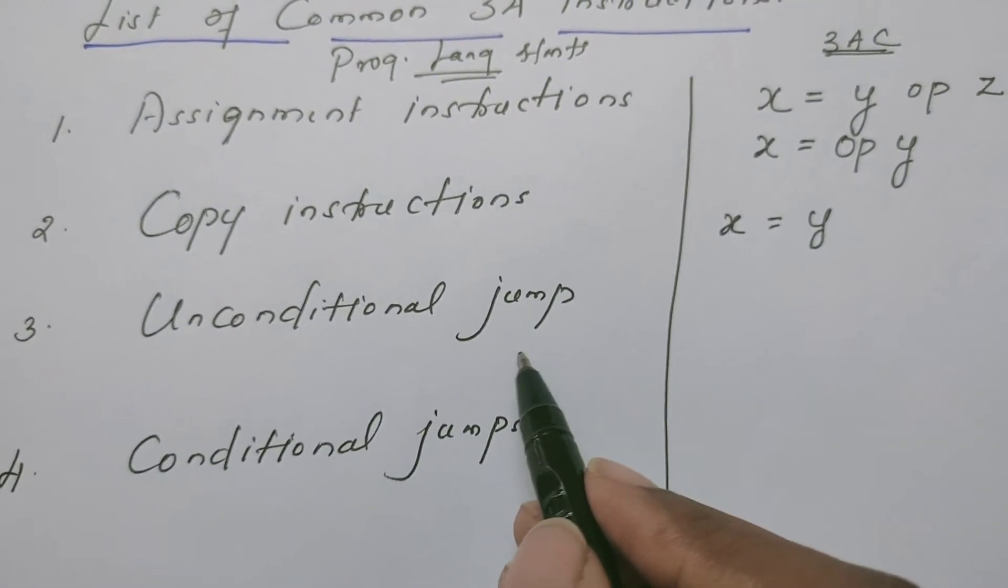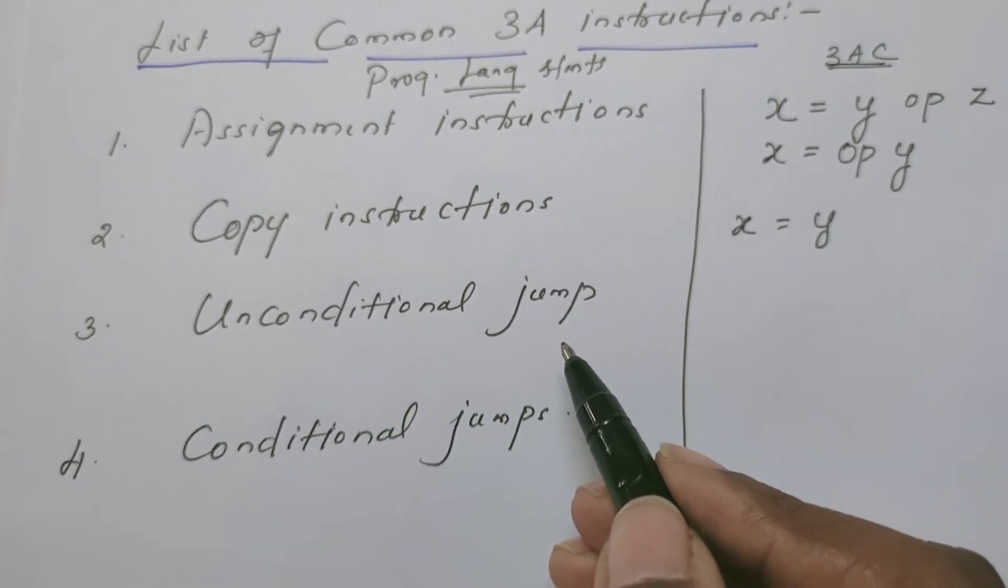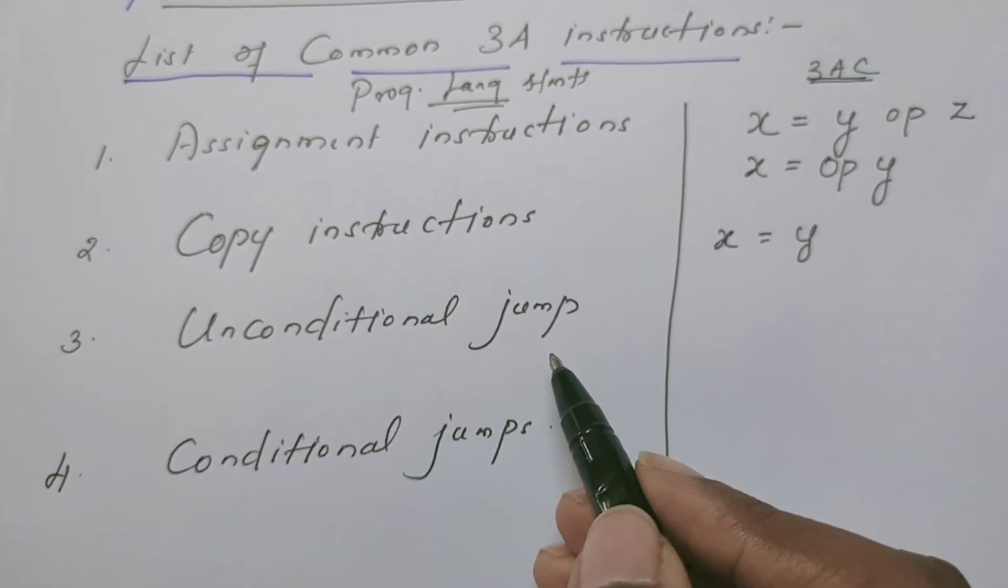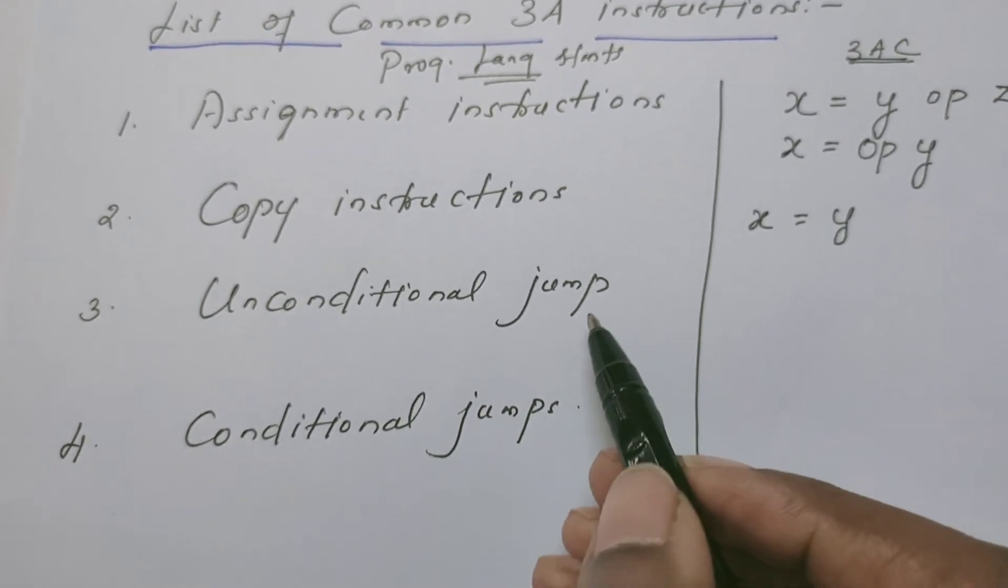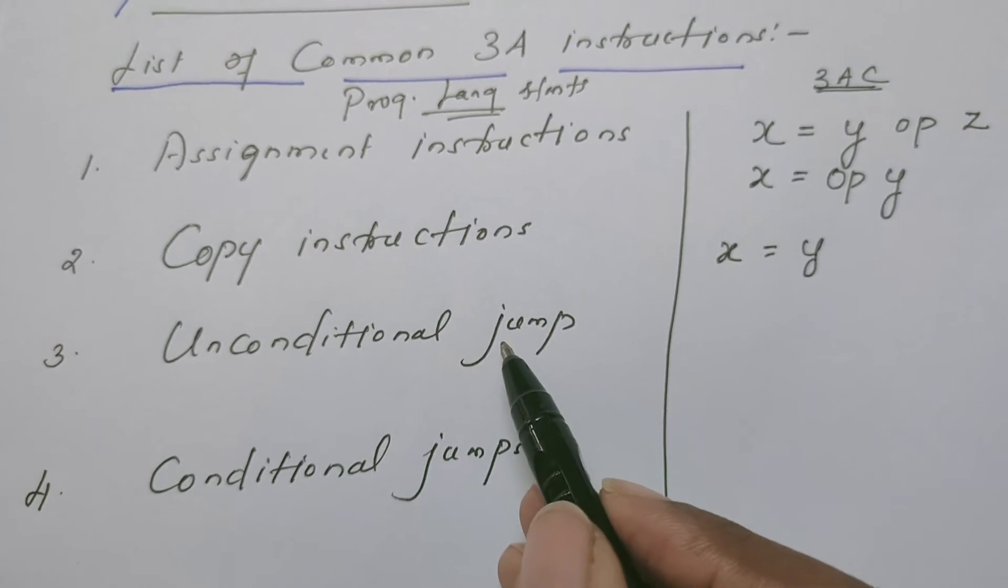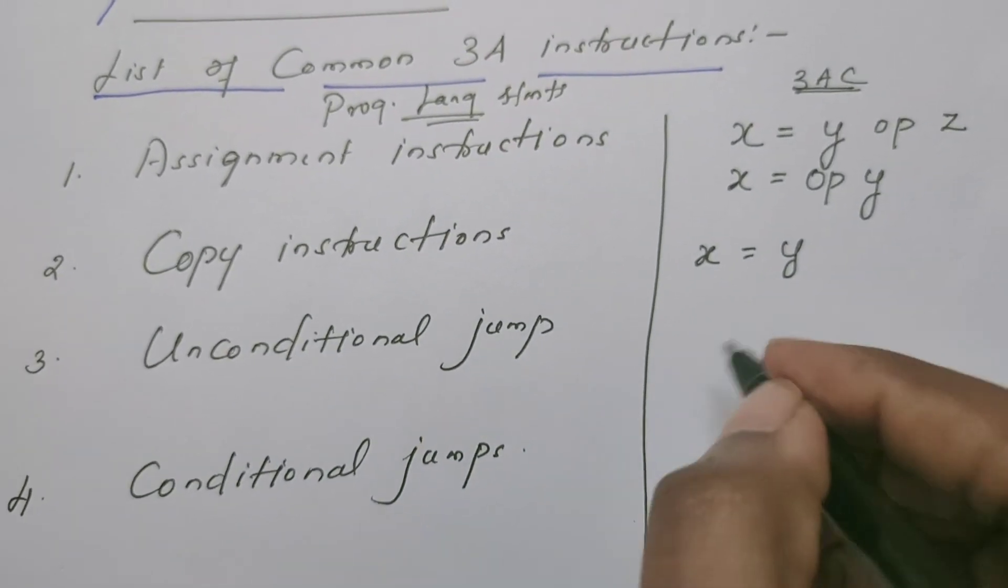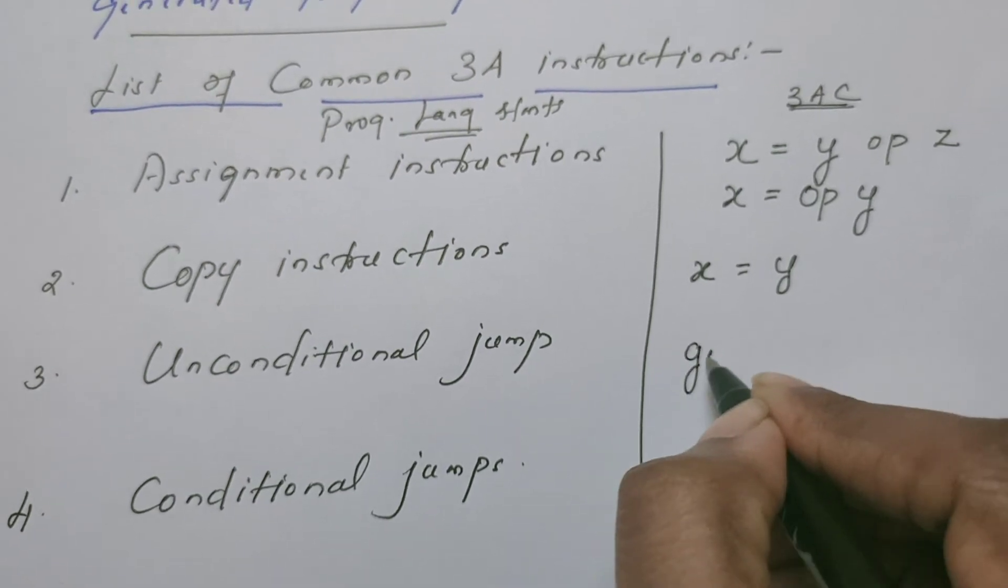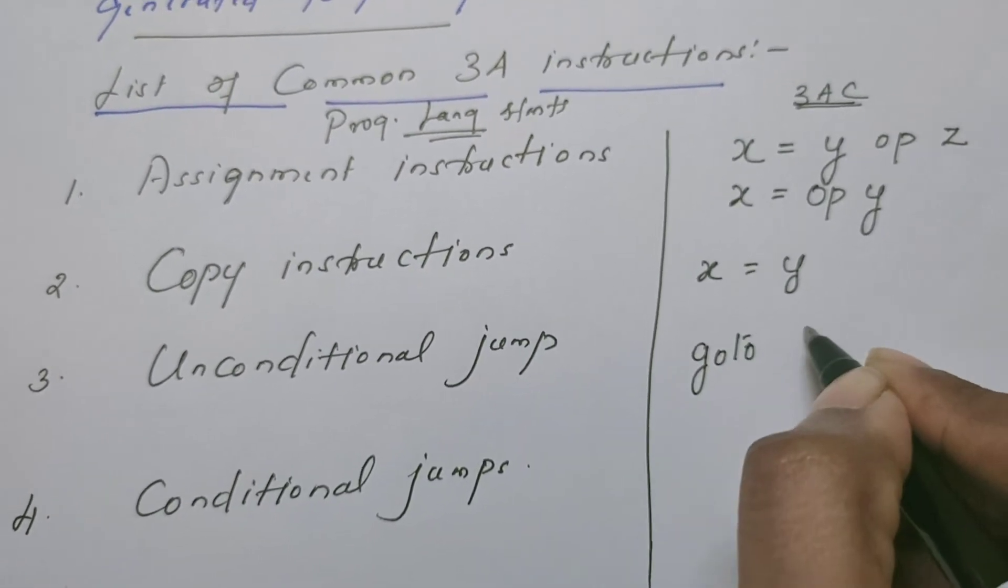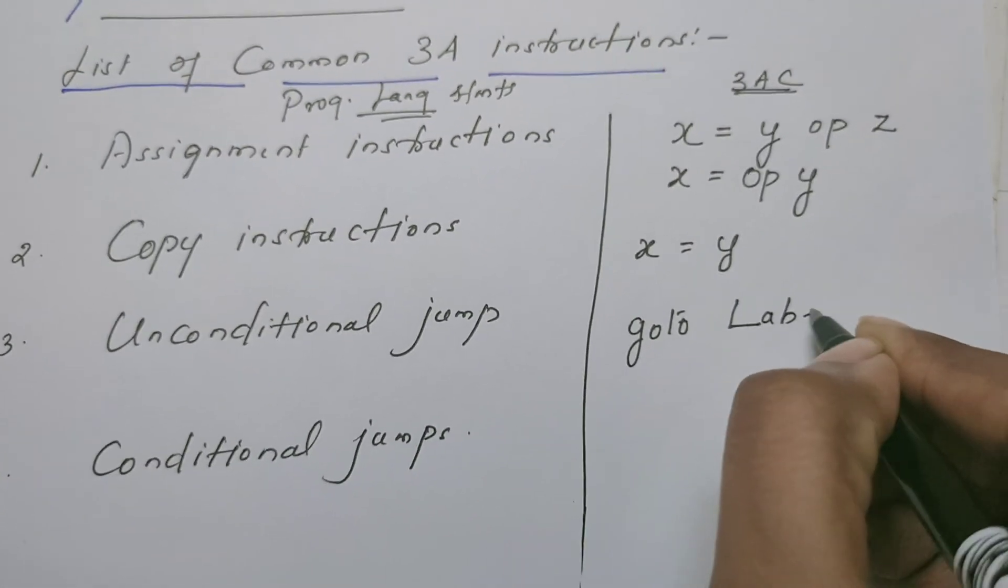Now let us move on to the unconditional jump. Jump means from some line of code, the execution is transferred to some other part of the program, without any condition. How do we translate the unconditional jumps of high level language into 3 address code? Very simple: use the go to and give some label name. L stands for label.